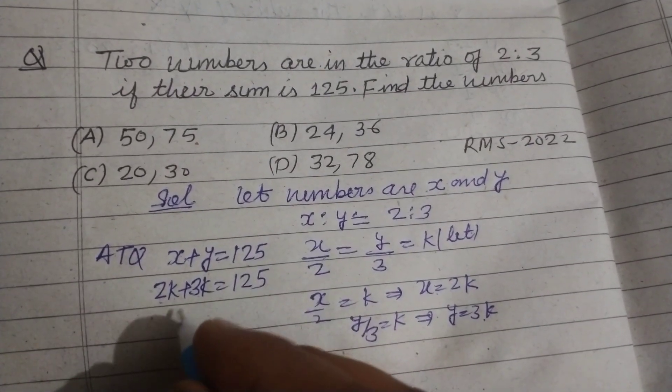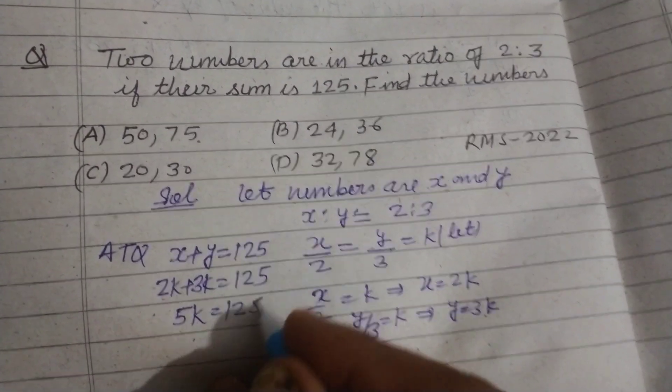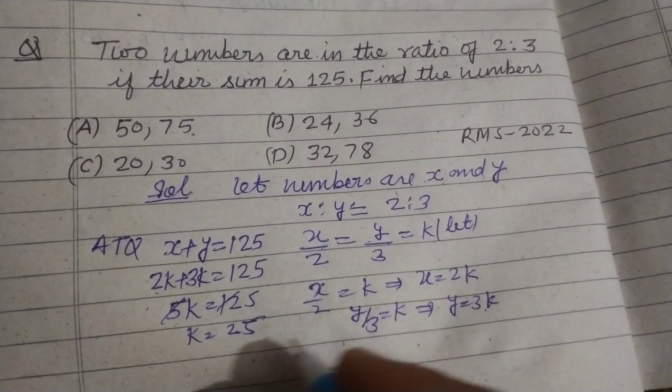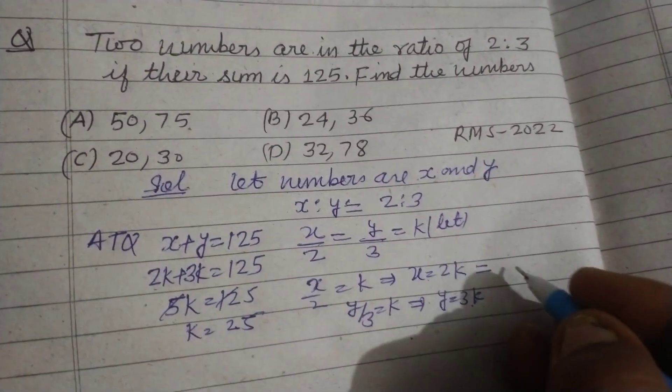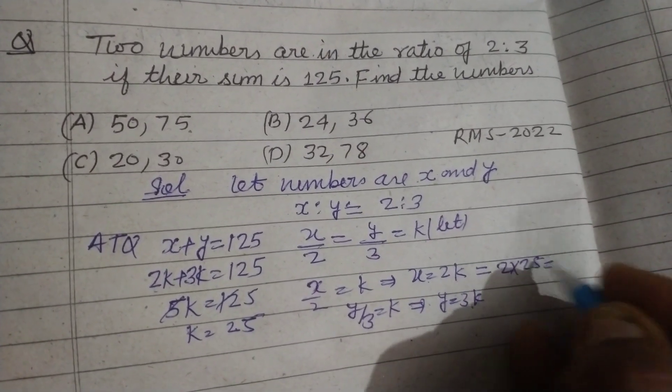So this will be 5k = 125. 5 times 25 is 125, so k = 25.